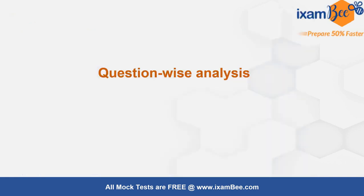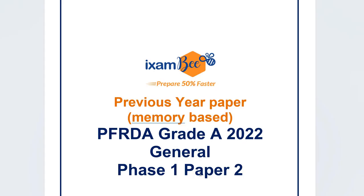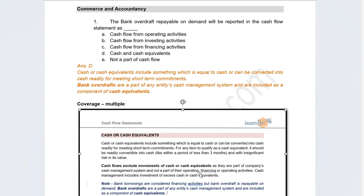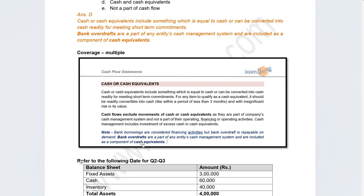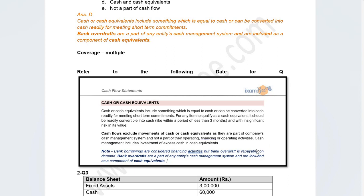Now let's talk about the question-wise analysis of all 50 questions, which you can also download from the description box. The first question in commerce and accountancy was: where is bank overdraft repayable on demand shown in the cash flow statement? The correct answer is that it is equivalent to cash and cash equivalents — as specifically stated in our notes, bank overdraft payable on demand is treated as cash.